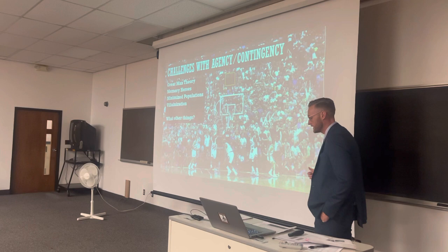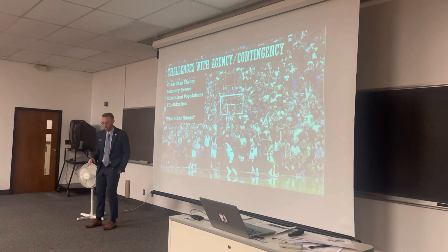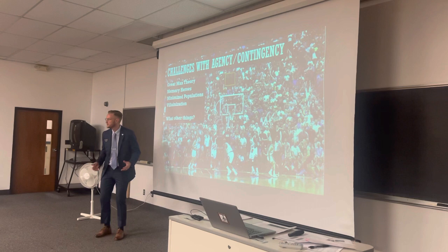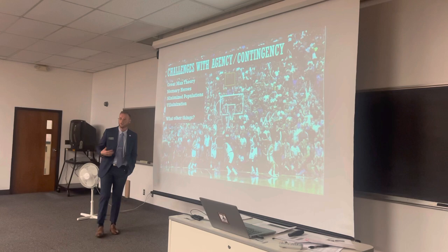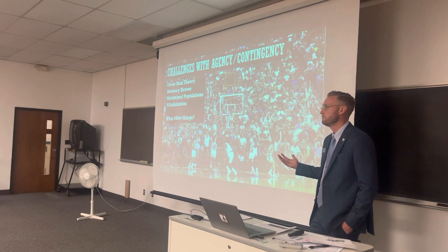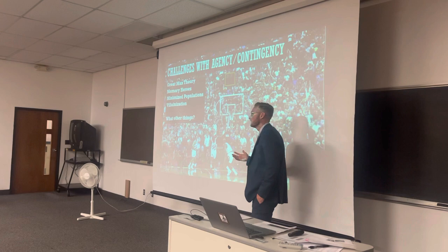One issue with agency and contingency is what we call 'great man theory' — the idea that we sometimes build up individuals to be more than they were. All human beings are flawed. We like to look at historical figures as monolithic entities that could do no wrong. I love Martin Luther King Jr., but there were things about MLK that weren't great at different points in his life. If you try to view people as perfect, it's going to ruin you — because people let you down, and human beings are fallible.